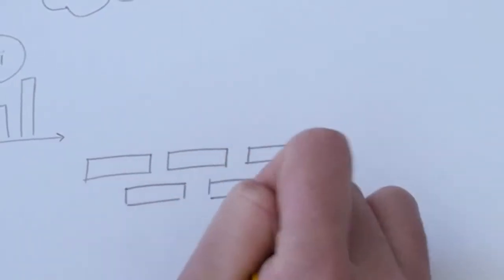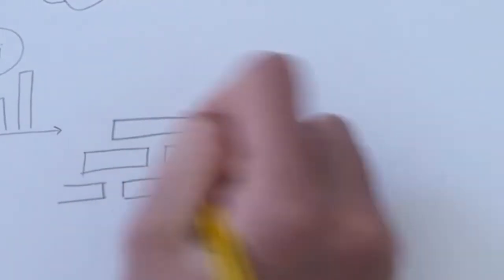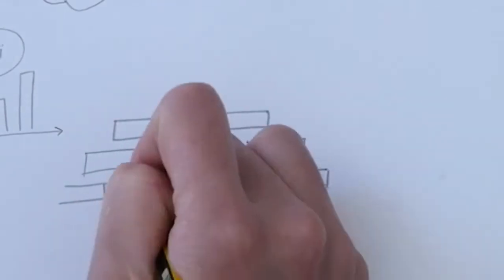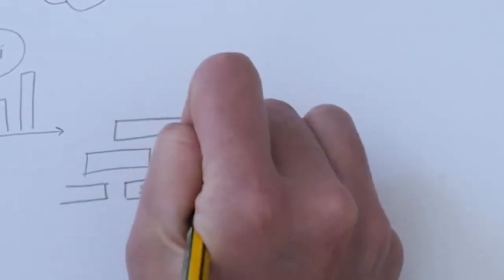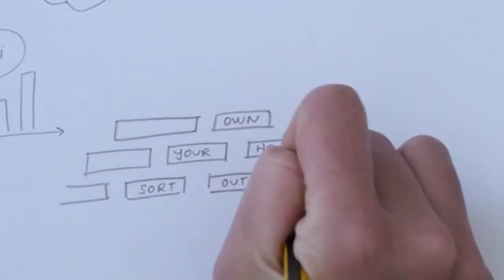Three, get your own house in order. This can be really difficult, but you can't start to improve things for others if your own internal policies and practices aren't up to scratch.